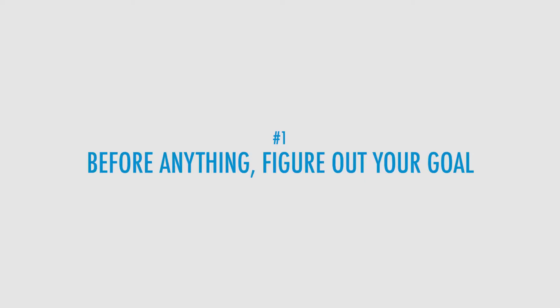First and foremost, before you do anything to prioritize your ideas, figure out your goal. What is your North Star, Sean Ellis would say. Is it 100 new customers? Is it $1 million in revenue a year, or $10 million — whatever it is. Work backwards from your goal. Simple. But you forget to do that when you come up with ideas — it's right brain, left brain thinking, and they don't get along.